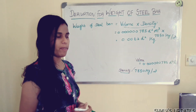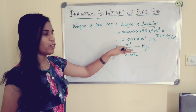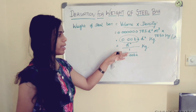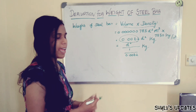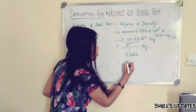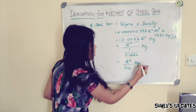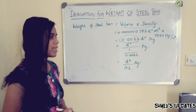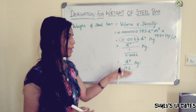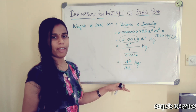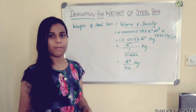After this step, we have to bring the D square value downward. So I have written it as 1 divided by 0.0062, and when we solve this we get D square divided by 162 kg. The actual formula is D square L divided by 162 kg, since L was taken as 1 meter earlier. So this is the derivation for the weight of steel bar.